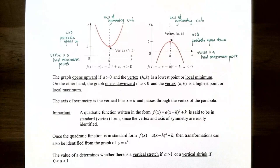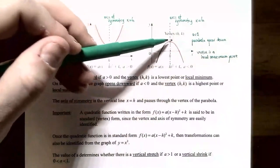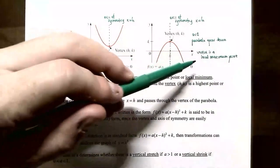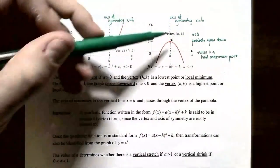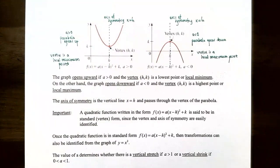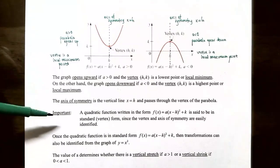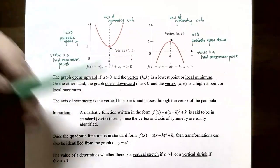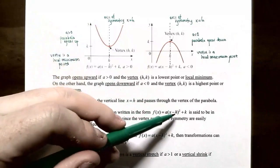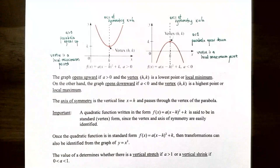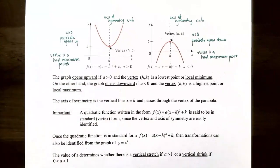If a is negative, the parabola opens downward and the vertex is a local maximum point. The axis of symmetry is still x = h, passing through the vertex. From vertex form, you can directly identify the vertex (h, k) and the axis of symmetry x = h for either case.